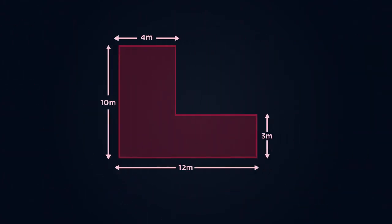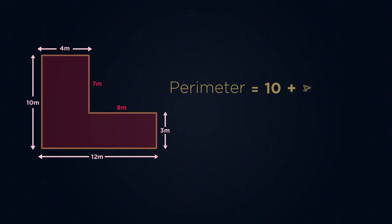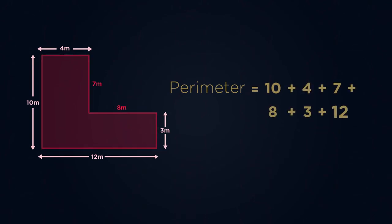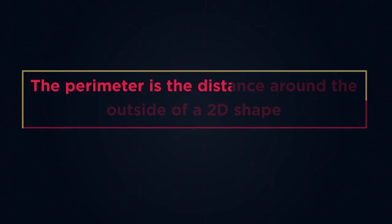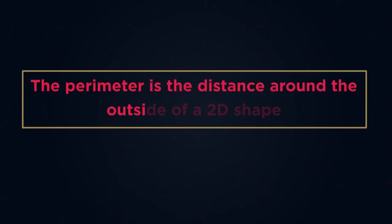The other shape needs a little less work. Simply work out the missing dimensions of 7 metres and 8 metres, and then add them up as you normally would. So from this video, you should know that the perimeter is the distance around the outside of a 2D shape, and you've practised finding the perimeter for simple shapes, compound shapes and even circles.